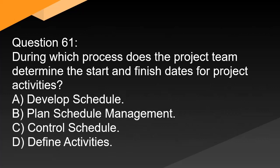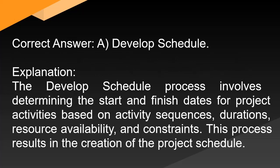Question 61: During which process does the project team determine the start and finish dates for project activities? A. Develop schedule. B. Plan schedule management. C. Control schedule. D. Define activities. Correct answer: A. Develop schedule. Explanation: The develop schedule process involves determining the start and finish dates for project activities based on activity sequences, durations, resource availability, and constraints. This process results in the creation of the project schedule.